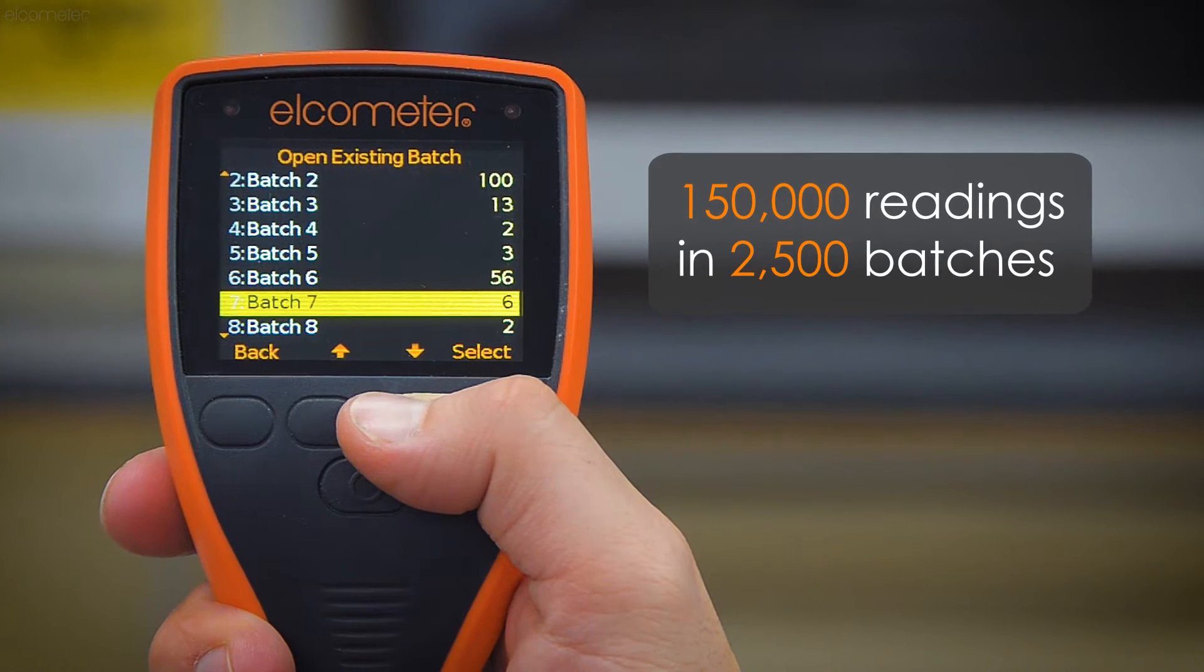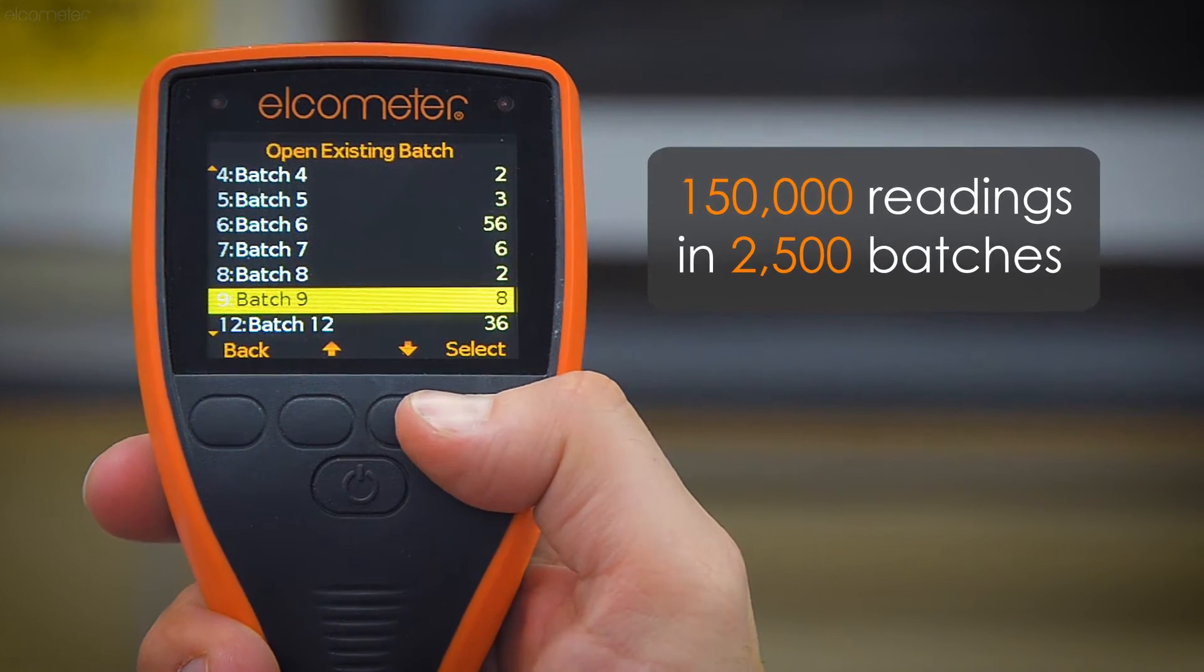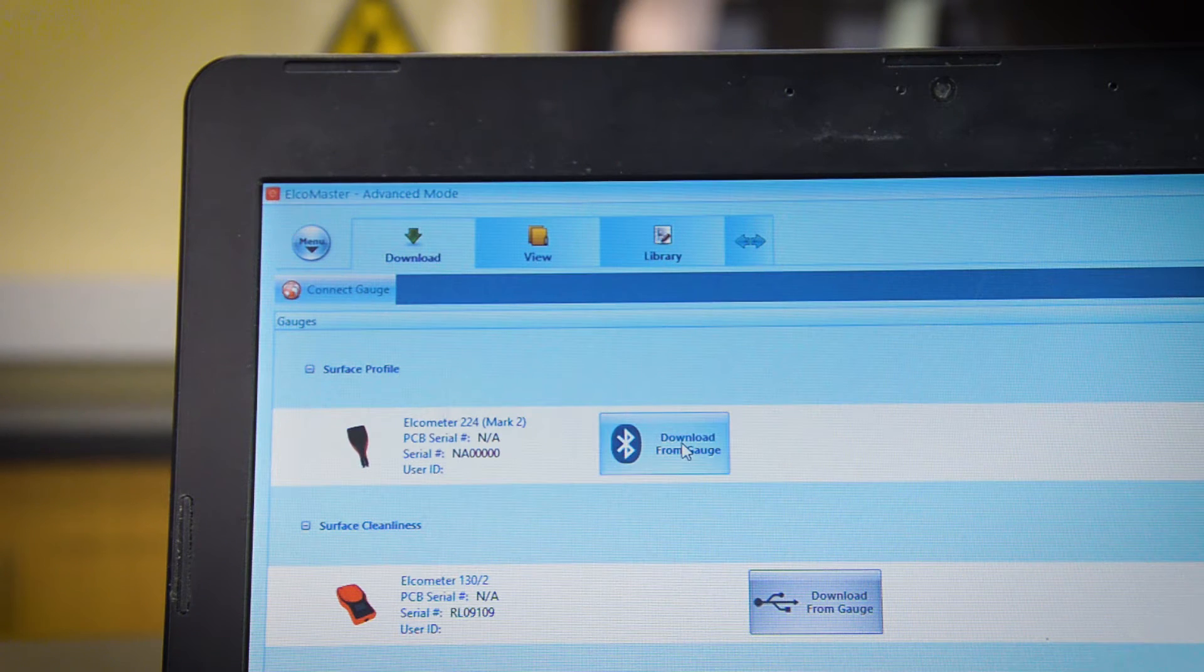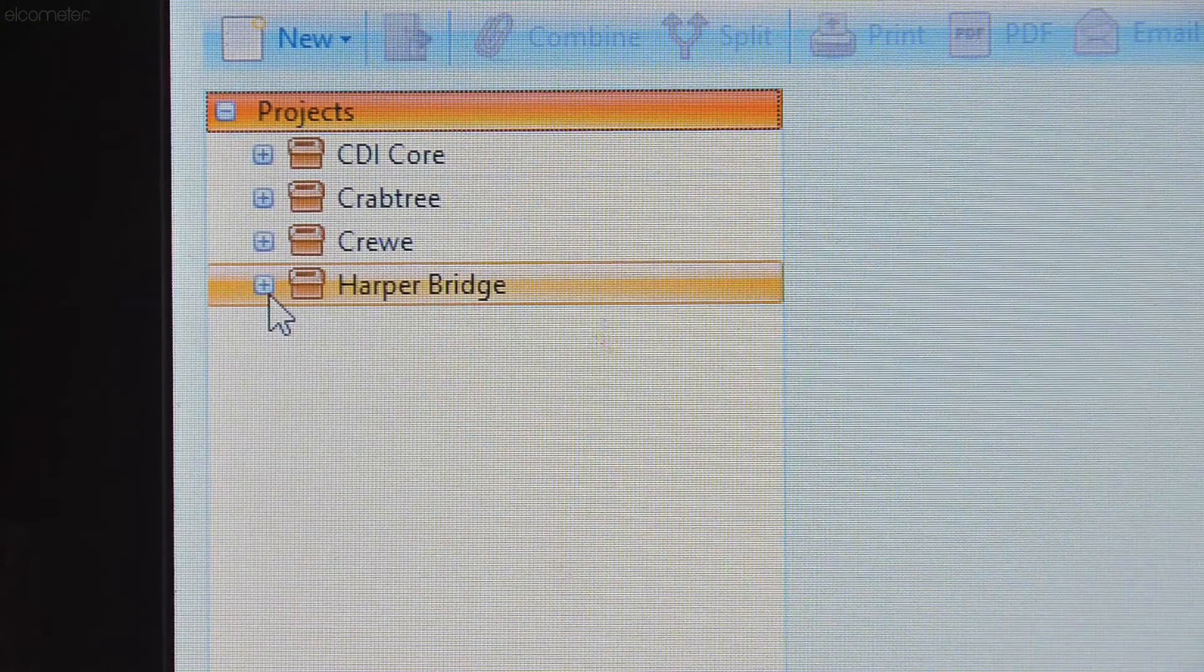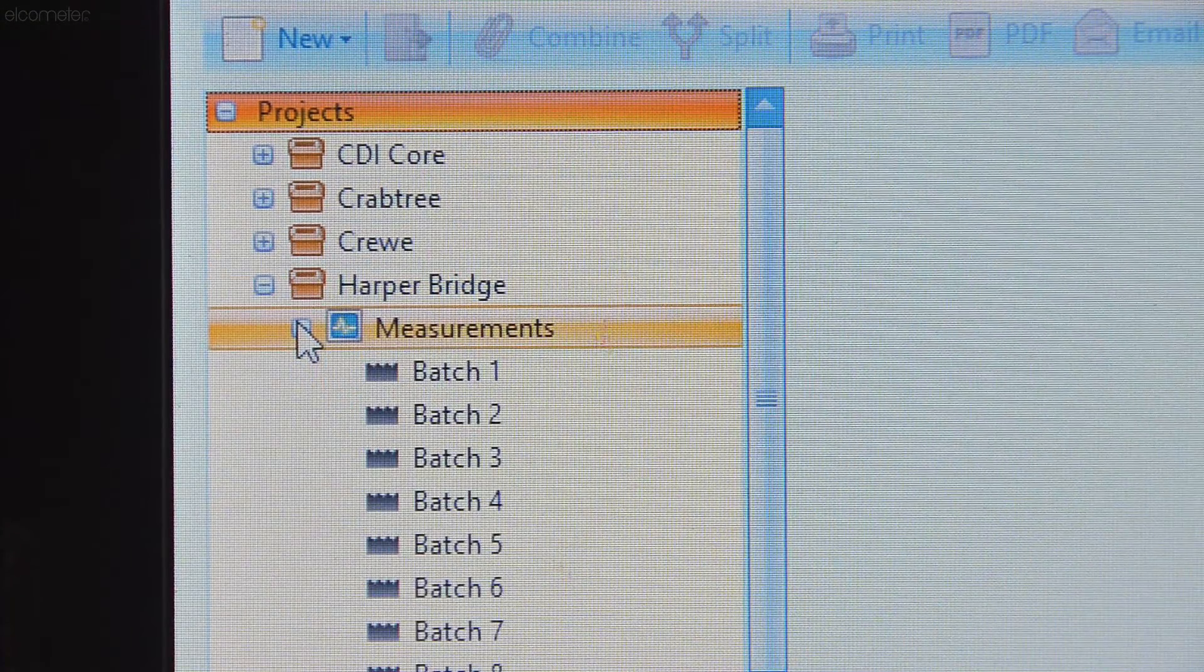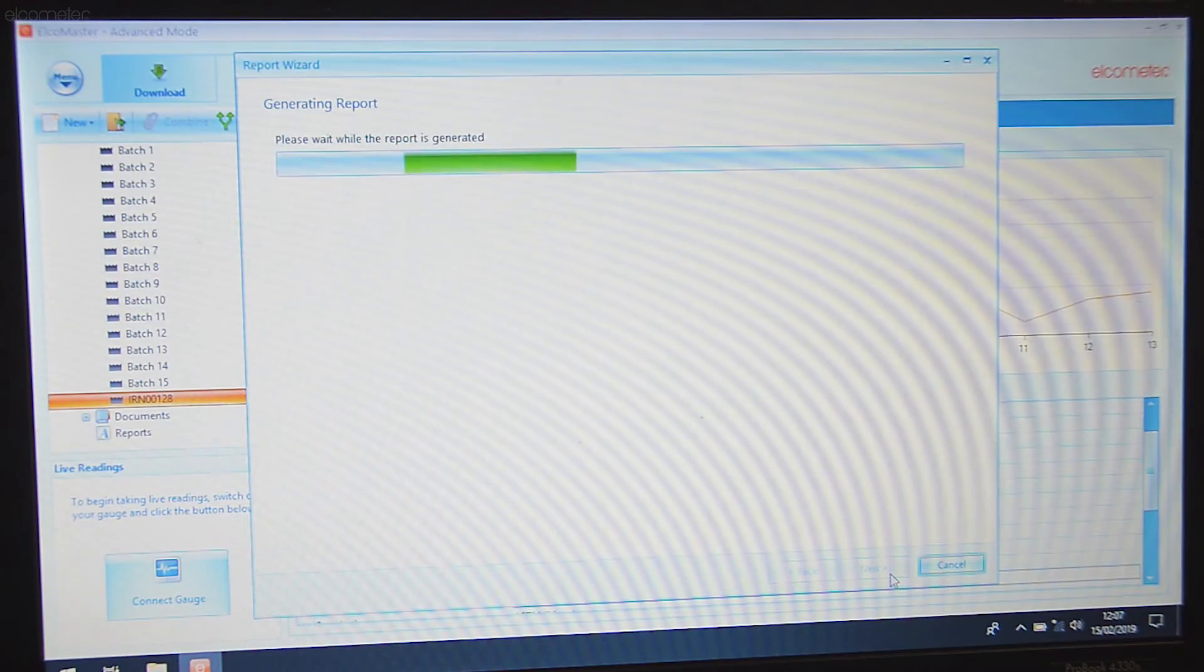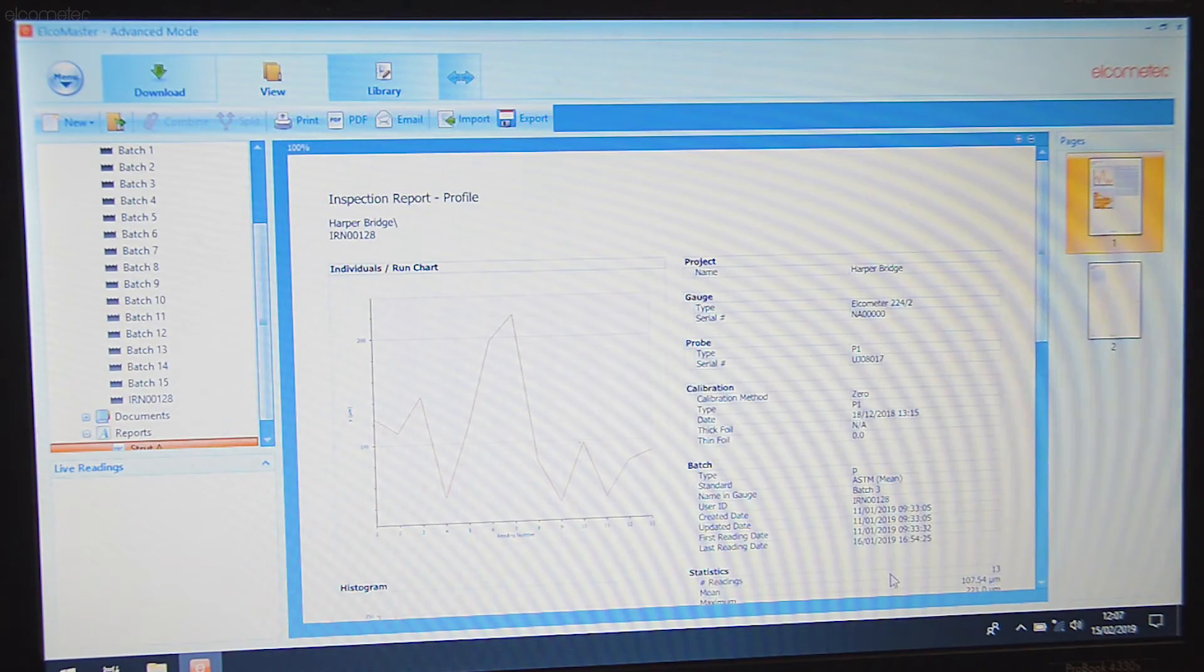You can store each reading into memory and can instantly transfer them to your PC or mobile device using ElcoMaster, our free, easy to use software application, generating professional inspection reports instantly.